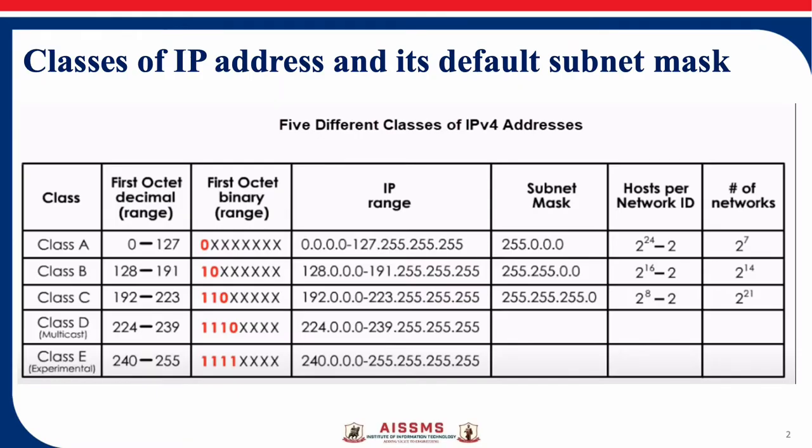IPv4 addresses are divided into 5 classes: Class A, Class B, Class C, Class D, and Class E. IPv4 address is of 32 bits and it has 4 octets.